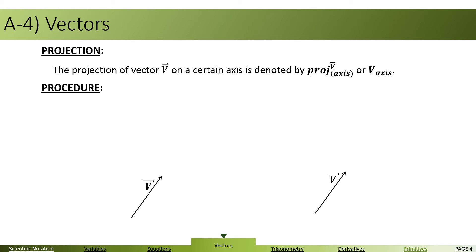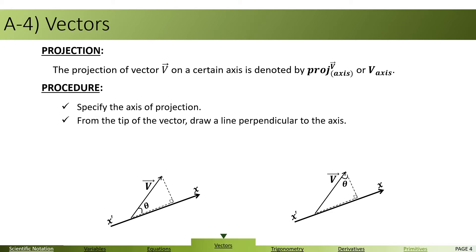In order to project a vector on a line, first, we specify the axis of projection. Second, from the tip of the vector, we draw a line perpendicular to the axis. You can see this in the figures below.